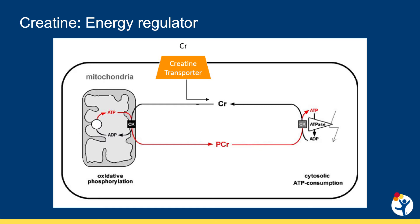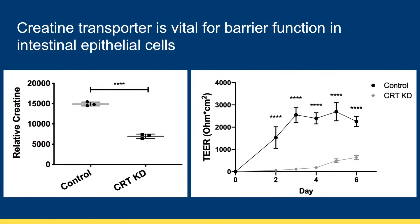In this cycle, creatine is brought into the cell by the creatine transporter. The creatine can then be used to shuttle energy to areas of increased need by carrying a high energy phosphate bond, which can be used to make ATP. Preliminary studies identified creatine as a potential regulator of barrier function. In order to evaluate if expression of the creatine transporter could contribute to barrier function, we knocked down the creatine transporter in a colonic epithelial cell line. The knockdown cells had reduced intracellular creatine, as seen on the left, and impaired barrier formation as measured by transepithelial electrical resistance, or TEER, as seen on the right.